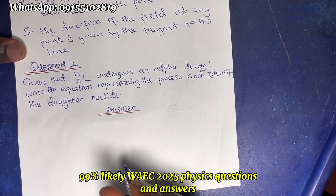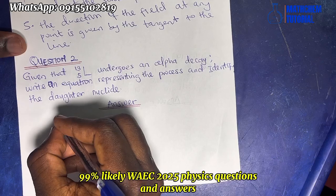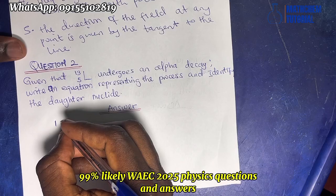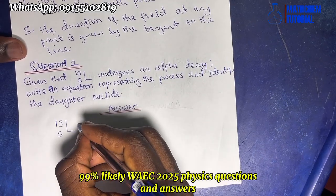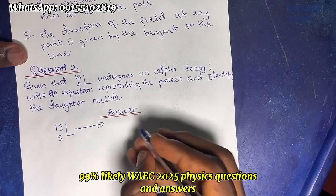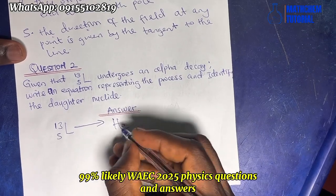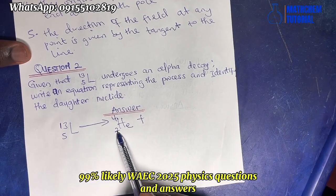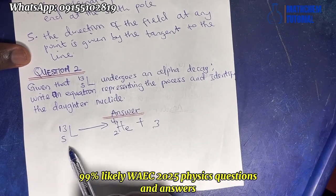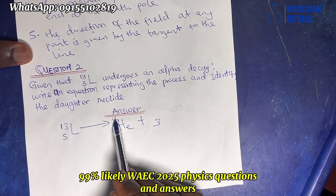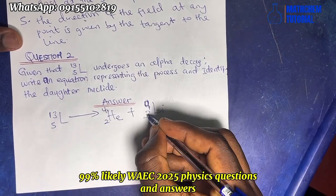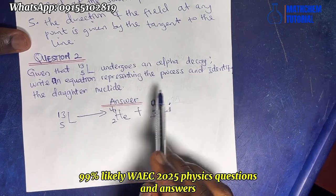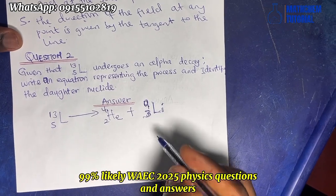To solve this, we write the alpha decay equation. Starting with 13-L5, we extract the alpha particle, which is helium: He-4-2. So 5 minus 2 gives atomic number 3, and 13 minus 4 gives mass number 9. This gives us lithium-9.